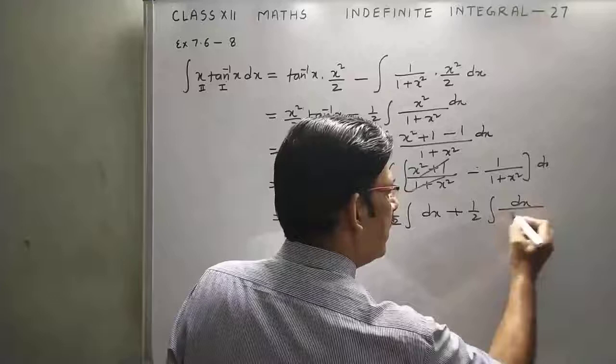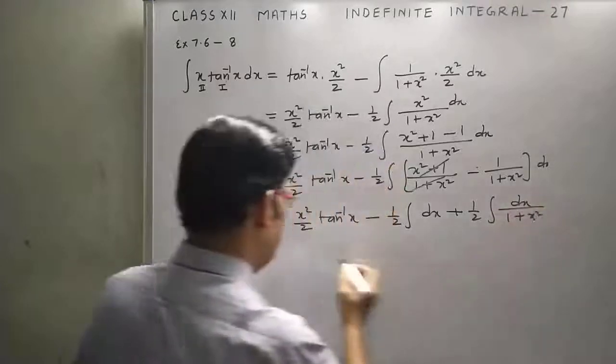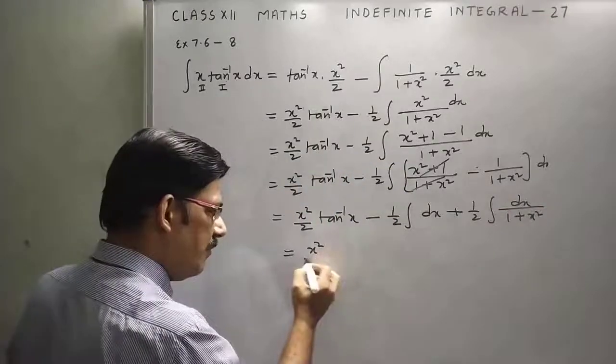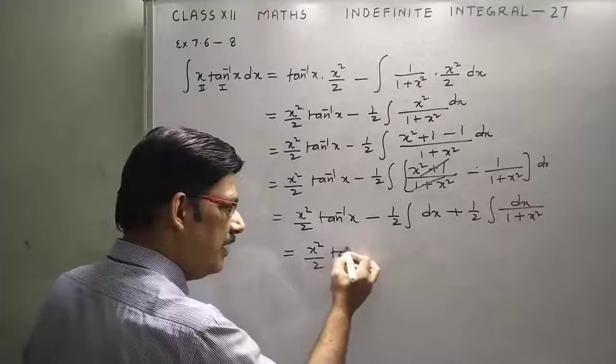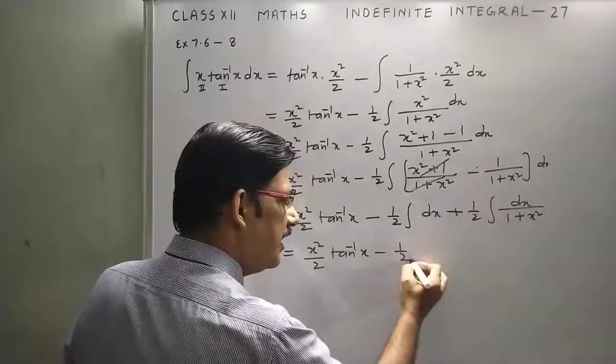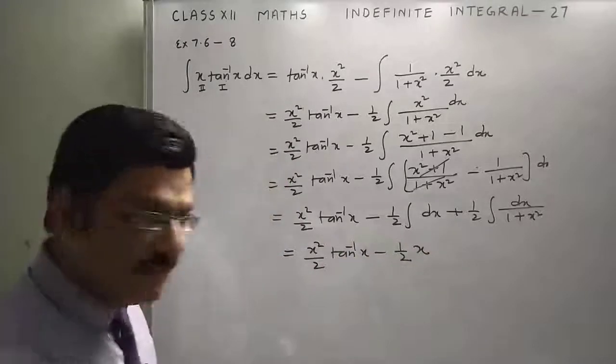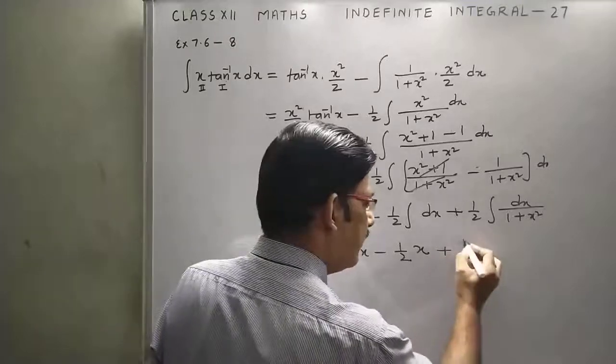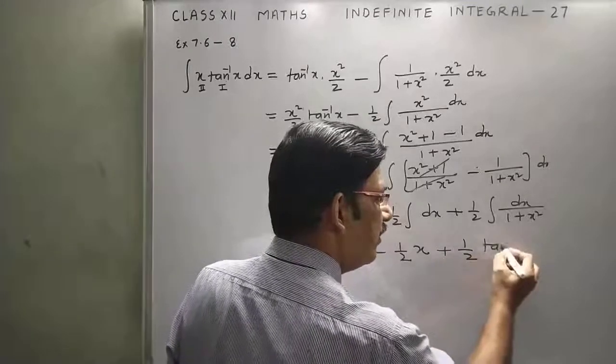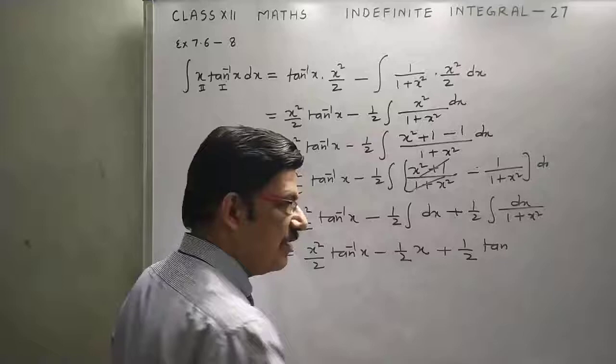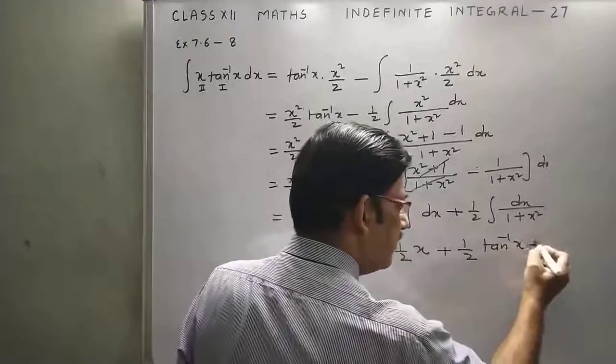So we have X square upon 2 tan inverse X copy, minus integration of 1 means X, and half integration of 1 upon 1 plus X square means tan inverse X plus C.